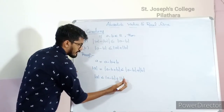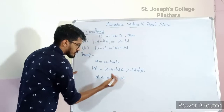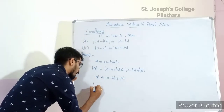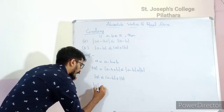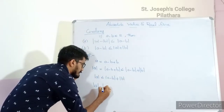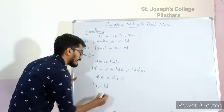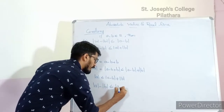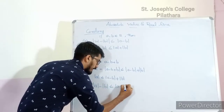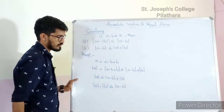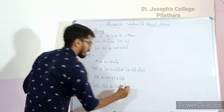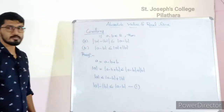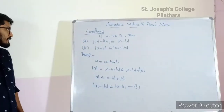Shifting |b| to the left-hand side, therefore |a| − |b| ≤ |a − b|. This is equation 1.